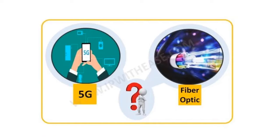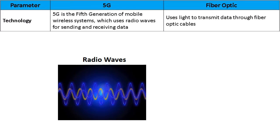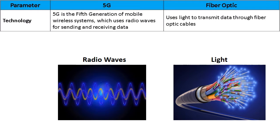In fiber versus 5G, 5G has great potential to grow rapidly and will surely be a tough challenge for fiber optic communications. In terms of technology, 5G uses radio waves for sending and receiving data, while fiber optic communication uses light to transmit data through fiber optic cables. Fiber optics uses the principle of total internal reflection, due to the low refractive index of the cladding, and hence the light beam stays inside the core of the fiber.